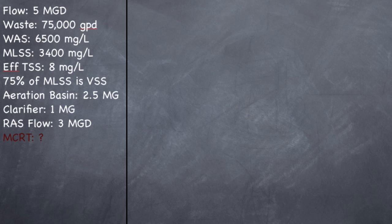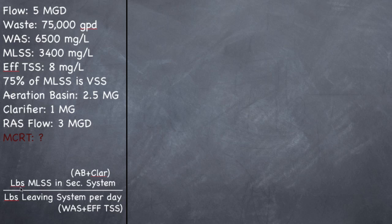So the formula for MCRT is pounds of mixed liquor suspended solids. It's not MLVSS, it's MLSS in your secondary system, which is your aeration basin plus your clarifier, divided by pounds leaving the system per day, your waste activated sludge plus your effluent TSS. So first we need to figure out how many pounds of MLSS is in the secondary system.